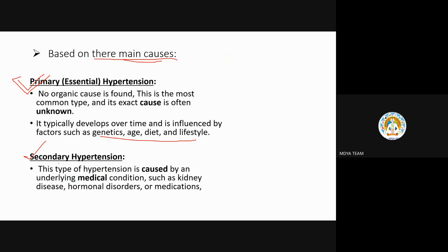Secondary hypertension is caused by specific underlying medical conditions — such as diabetes mellitus, kidney disorders, or hormonal disorders. For example, in kidney disorder, fluid imbalance can increase blood volume, making blood more liquid and raising pressure. Medications can also be a cause.